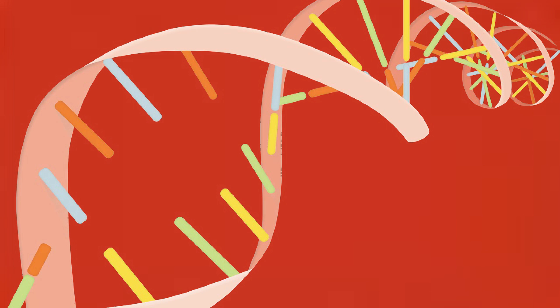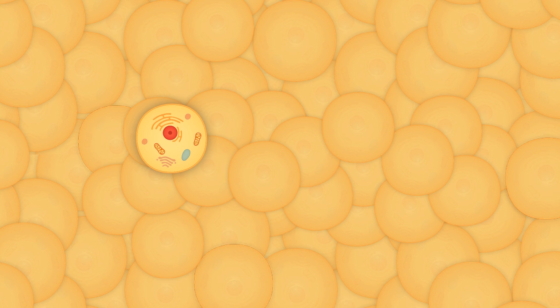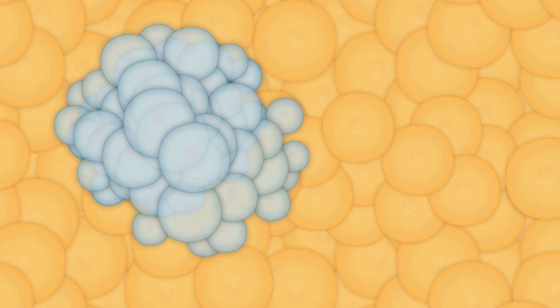Damage or change in the genetic material of cells by environmental or internal factors sometimes results in cells that have lost the ability to react to signals properly. Instead of dying, they continue to multiply until a mass of cancer cells or a tumor develops.